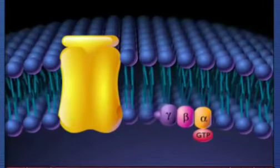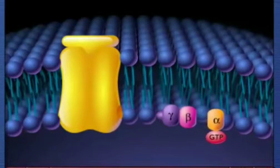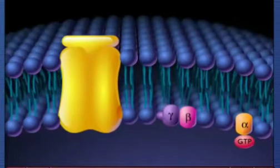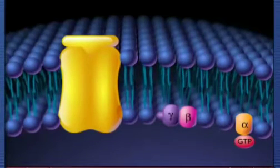The activated alpha subunit then separates from the beta and gamma subunits. This step can be repeated as long as the ligand remains bound to the receptor.